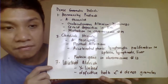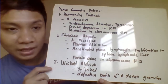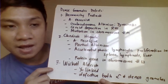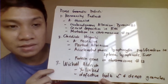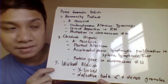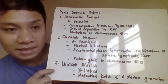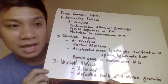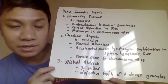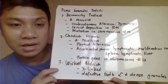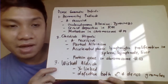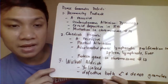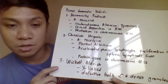Another one is Wiskott-Aldrich syndrome. Wiskott-Aldrich is sex-linked — inherited as an X-linked trait. The defect in Wiskott-Aldrich involves a combination of both alpha granule and dense granule defects.